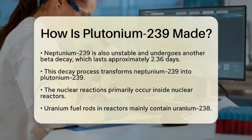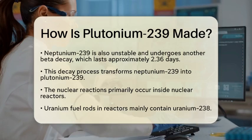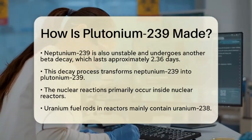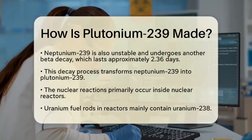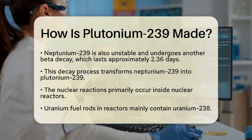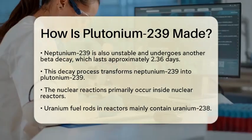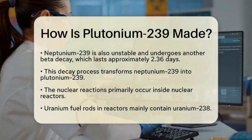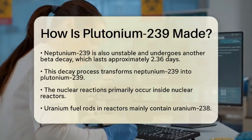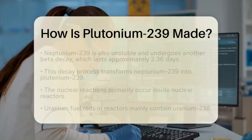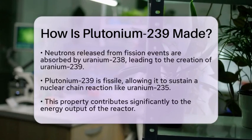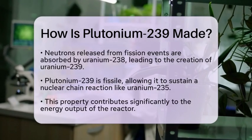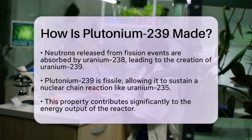These nuclear reactions mainly occur inside nuclear reactors. In these reactors, uranium fuel rods primarily contain Uranium-238. When the reactor operates, neutrons released from fission events are absorbed by Uranium-238 atoms. This process creates Uranium-239, which then becomes Plutonium-239.